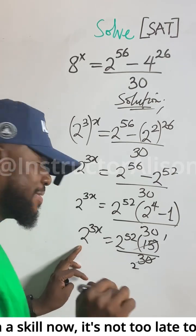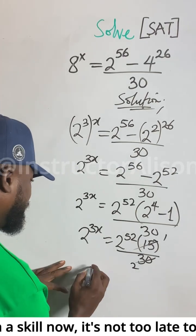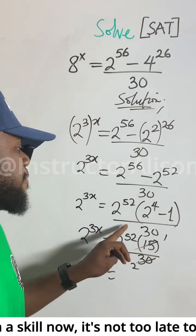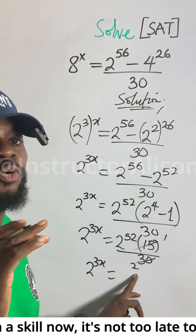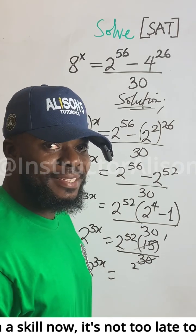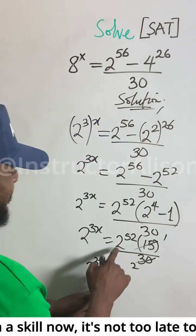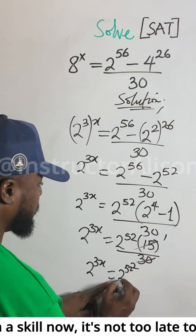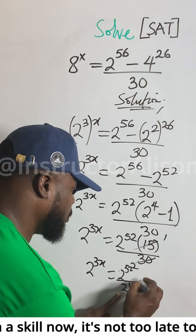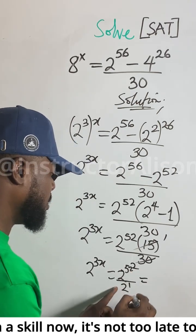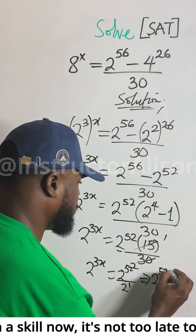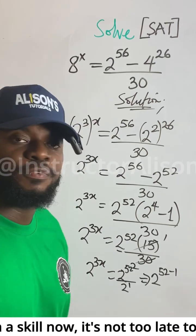Now remember, 2 to the power — you can see it here. They get 2 to the power of 52 up and 2 below, but remember this 2 at the bottom is the same as 2 to the power of 1. So since the base is the same, division law of indices — since the base is the same, take one of the common base and subtract: 52 minus 1 gives you 51.